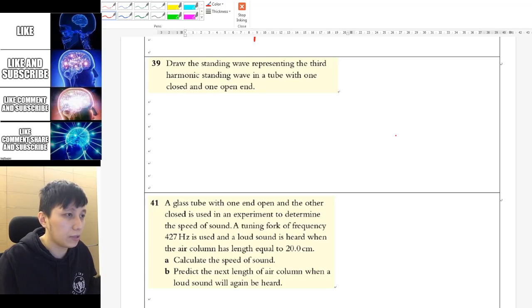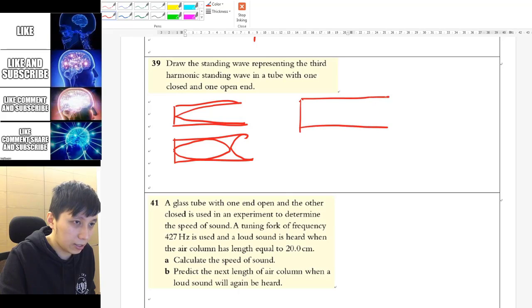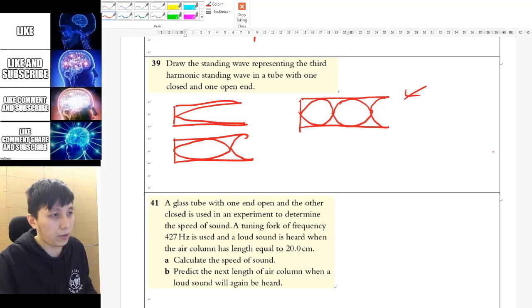Question 39, it asks you to draw the third harmonic for the one open, one closed system. And so if you don't know how to count it, then just draw from the first one. So what you will start with is probably something like this. And then the first harmonic, if you recall, is something like this. This is the simplest one. And then you can have the second harmonic to be something like this. Because at the end, this has to be the note. Here has to be the note. So then the third harmonic is just adding onwards, adding one more of this. So this is going to be the third harmonic.